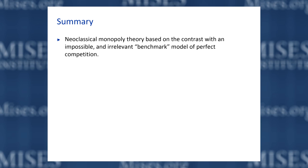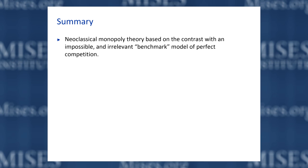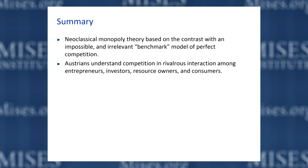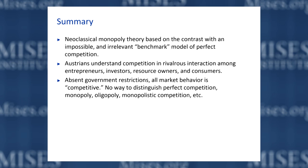To summarize: neoclassical monopoly theory is based on the contrast with an impossible and irrelevant benchmark model of perfect competition. Austrians, in contrast, understand competition as a rivalrous interaction among entrepreneurs, investors, resource owners, and consumers. Absent government restrictions — especially in Rothbard's view — all market behavior is competitive. There isn't any way to distinguish perfect competition from monopoly or the other labels found in neoclassical textbooks — oligopoly, monopolistic competition, and so forth. In the next session, we'll talk about some applications to antitrust, regulation, the minimum wage, and other issues building on the discussions we've had so far.